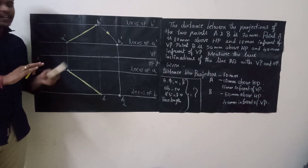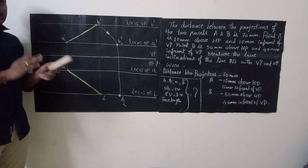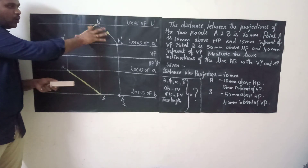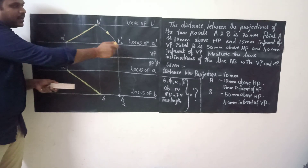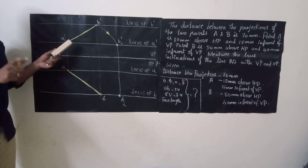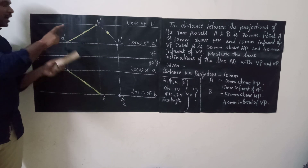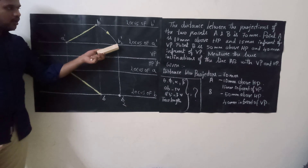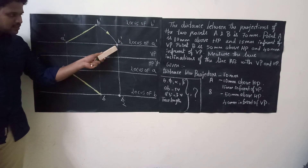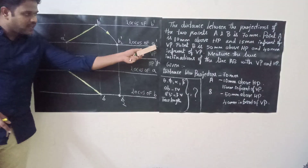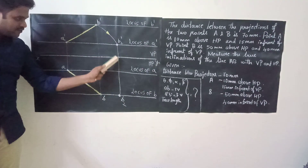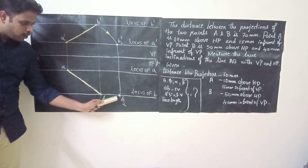Keep in mind that we only rotate the front view or top view — this is the rotating line method. Take your compass, measure A dash to B dash, and rotate it keeping the compass at A dash. When you rotate, the arc will cut the locus of A dash at one point — that point is called B2 dash. Then extend this point vertically until it cuts the locus of B, and that point is called B2.